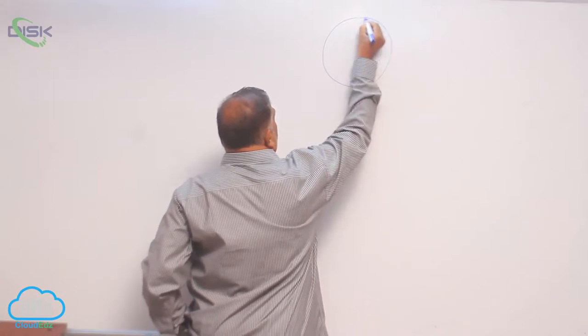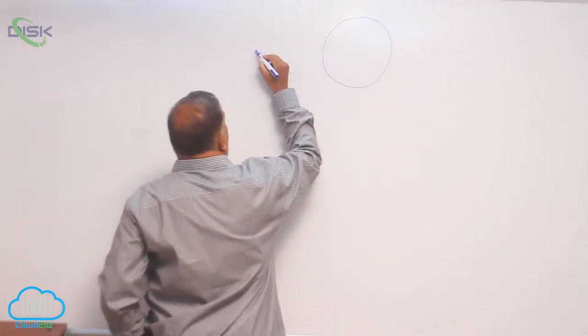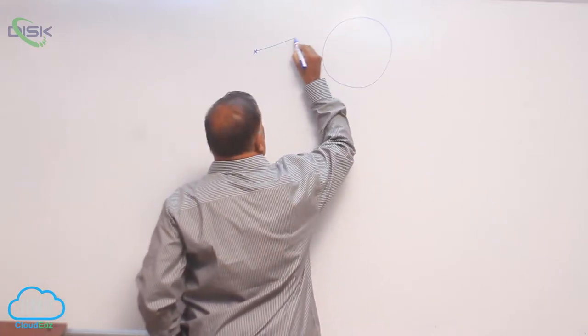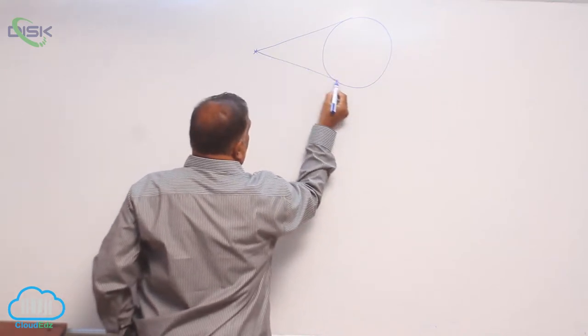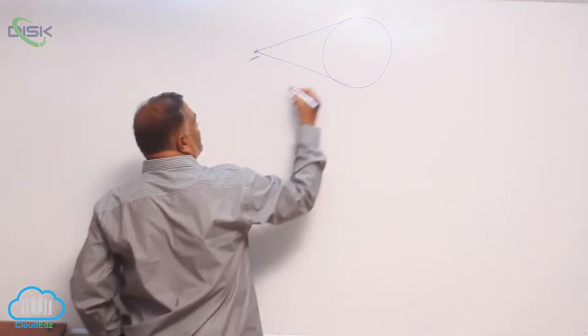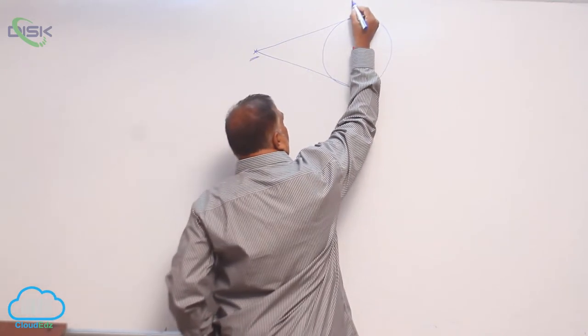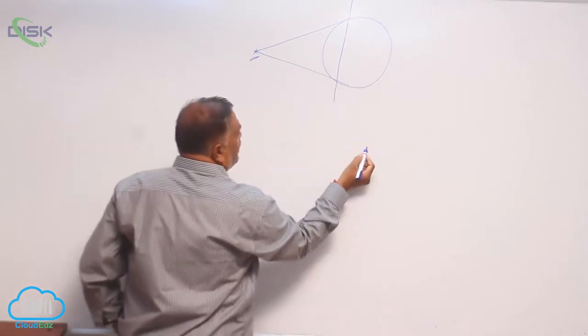When the circle is like this and the point is here, you can have a chord of contact directly like this. When the point lies outside, the chord of contact will be like this.